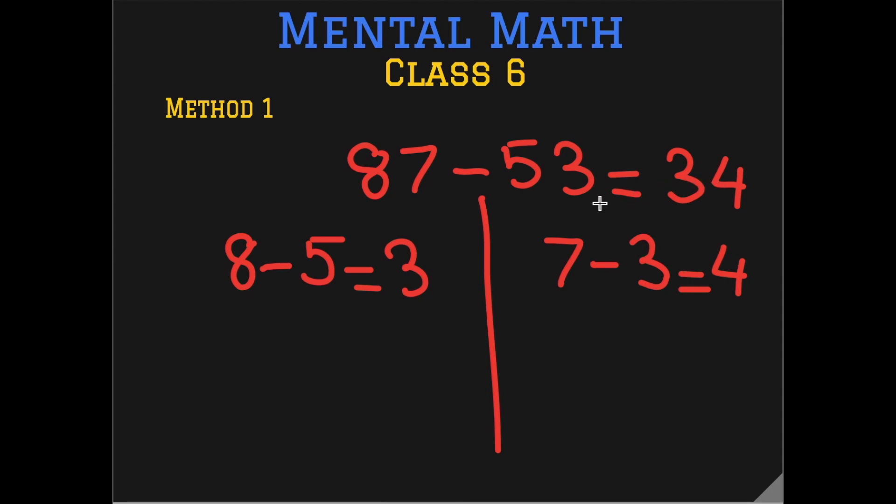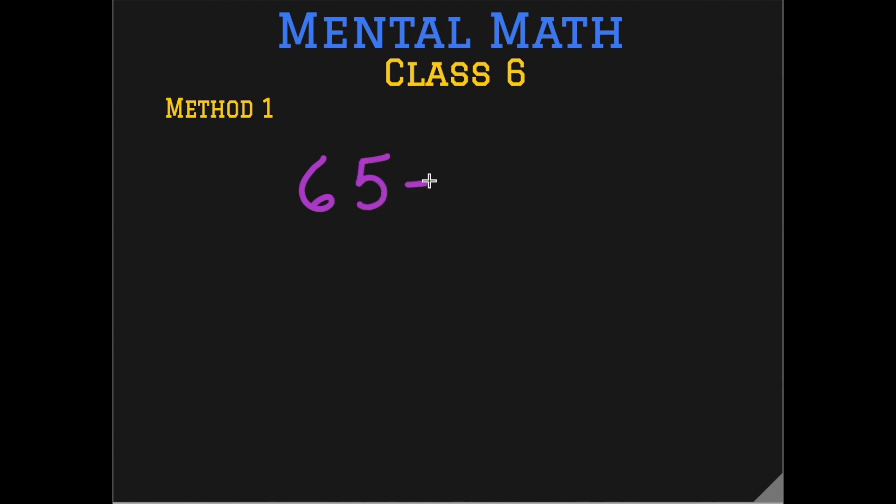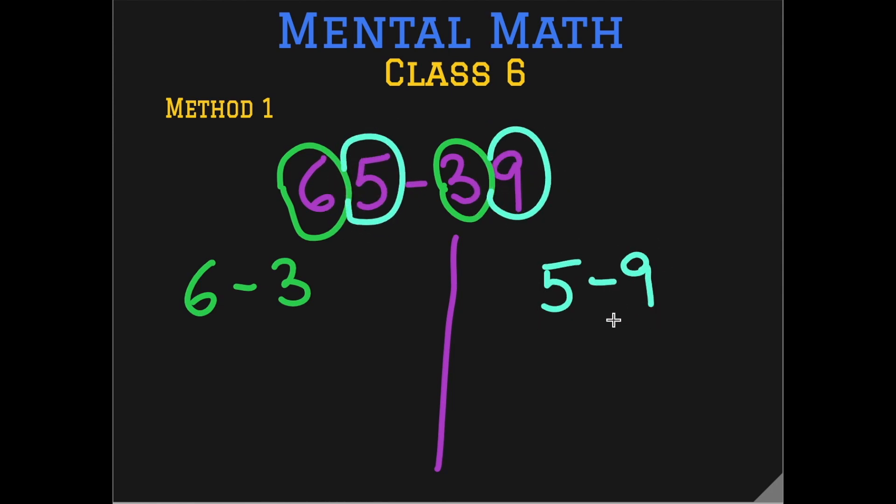This seems fine at this point but we will arrive at a slight problem and you will see in the next question. 65 minus 39. Split the question tens. 6 is from 65. 3 is from 39. And the ones are 5 and then minus 9. But what is this? Can we subtract a 9 from 5? And here is the problem with this method that it cannot be as simple as we were doing it before. Just like in normal subtraction we have to do something important.